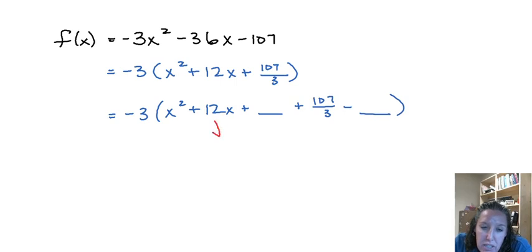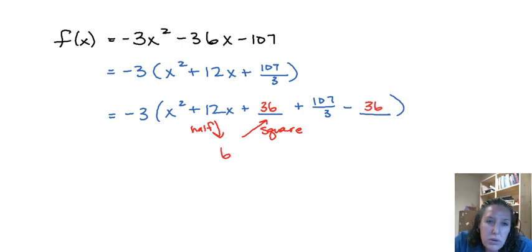Now we're going to take our coefficient on our x. We're going to take half of it and square it. So 12, half of that is going to be a positive 6. When we square that we get 36 on both sides.